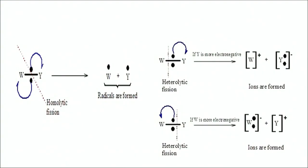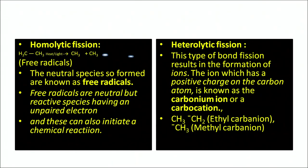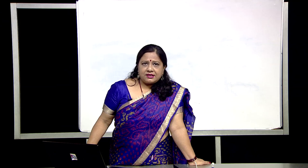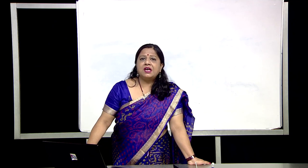You can see from the figure how the fission takes place. Homolytic fission results in the formation of free radicals, which are neutral species but highly reactive — they act as initiators in a chemical reaction. Whereas in heterolytic fission, carbanions and carbocations are formed. The charged species obtained by heterolytic fission initiate chemical reactions and are classified as electrophiles and nucleophiles.